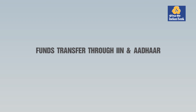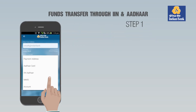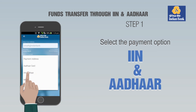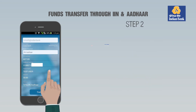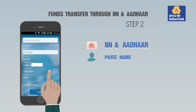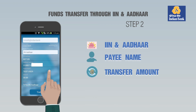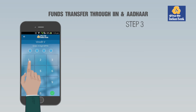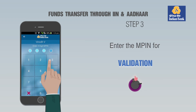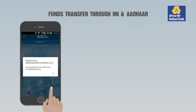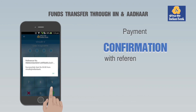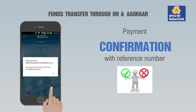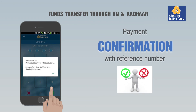Funds Transfer Through IIN and Aadhaar. Step 1: Select the Payment Option IIN Aadhaar. Step 2: Enter the IIN and Aadhaar, Payee Name, Transfer Amount and Payment Remarks. Step 3: Enter the N-PIN for validation. Payment confirmation with reference number and success or failure message will be displayed.